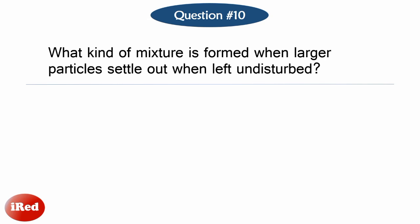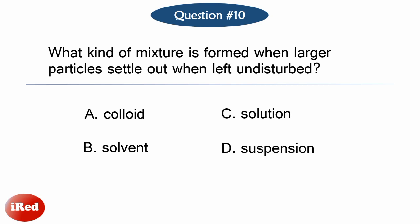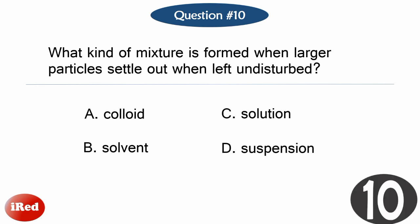Number ten: What kind of mixture is formed when larger particles settle out when left undisturbed? Letter A: Colloid. Letter B: Solvent. Letter C: Solution. Or letter D: Suspension.